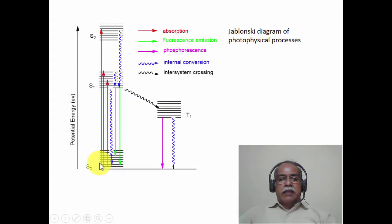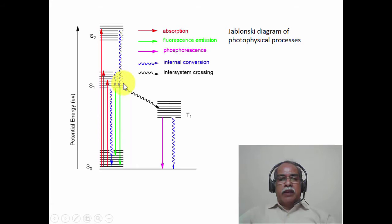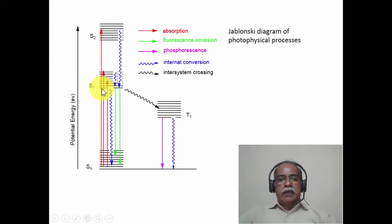The red lines represent electronic excitation from the ground vibrational level to various vibrational levels in S₁ and S₂. Any excitation to S₂ results in immediate non-radiative deactivation via internal conversion to S₁, and all subsequent photophysical events take place from S₁. If the molecule is excited to higher vibrational levels of S₁, it relaxes to the zeroth vibrational level of the excited state according to Kasha's rule before any other photophysical process occurs.